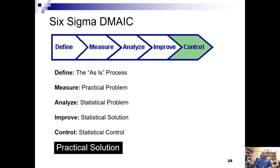To summarize the DMAIC phases: Define is the as-is process. Measure is the practical problem. Analyze is the statistical problem. Improve is the statistical solution. Control is statistical control. And it's all about achieving the practical solution.